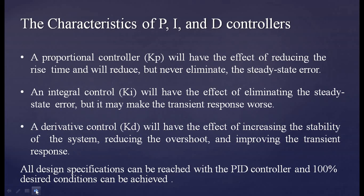The characteristics of P, I, and D controllers: a proportional controller (KP) reduces rise time and will reduce but never eliminate steady state error. An integral controller (KI) eliminates steady state error but may make the transient response worse — stability is an issue. A derivative controller (KD) increases stability of the system, reduces overshoot, and improves the transient response. All design specifications can be reached with the PID controller and 100% desired conditions can be achieved, making it the most desired type of controller.